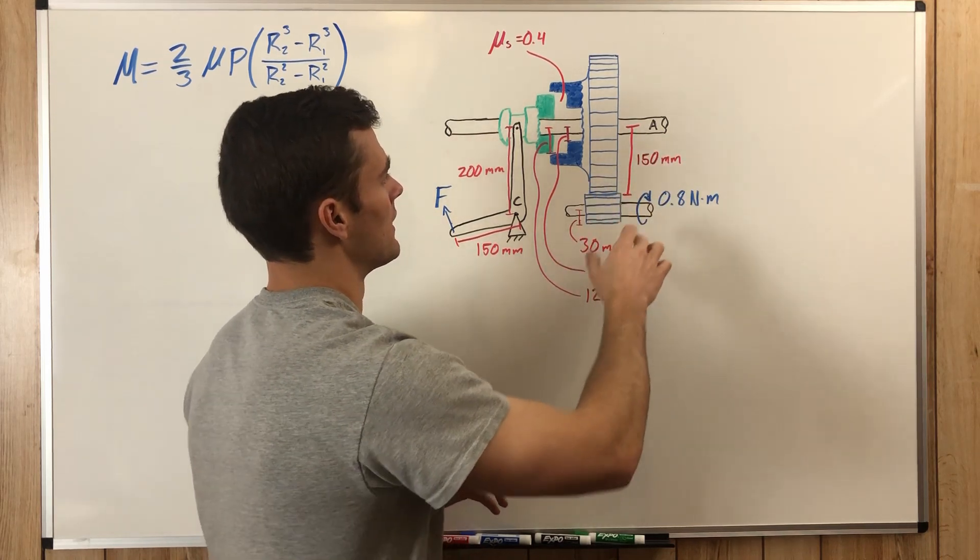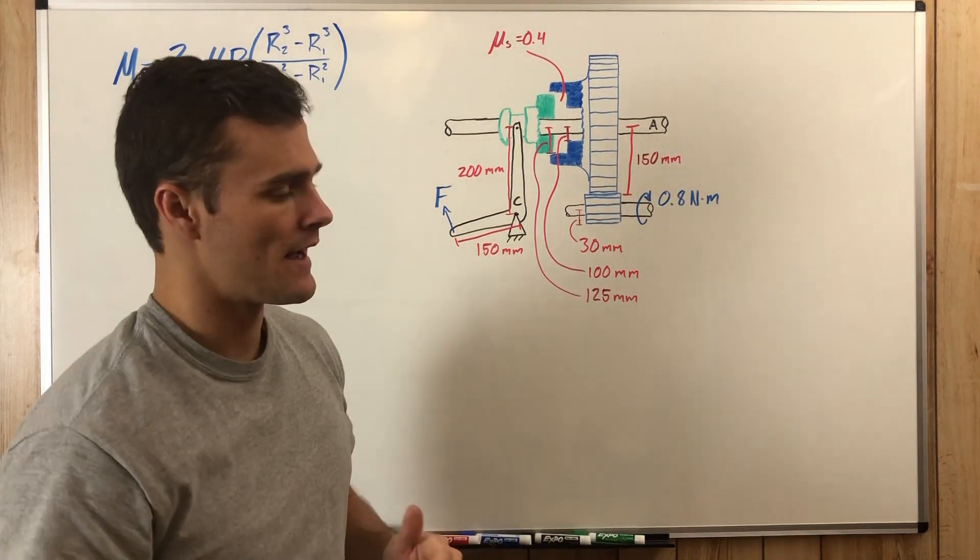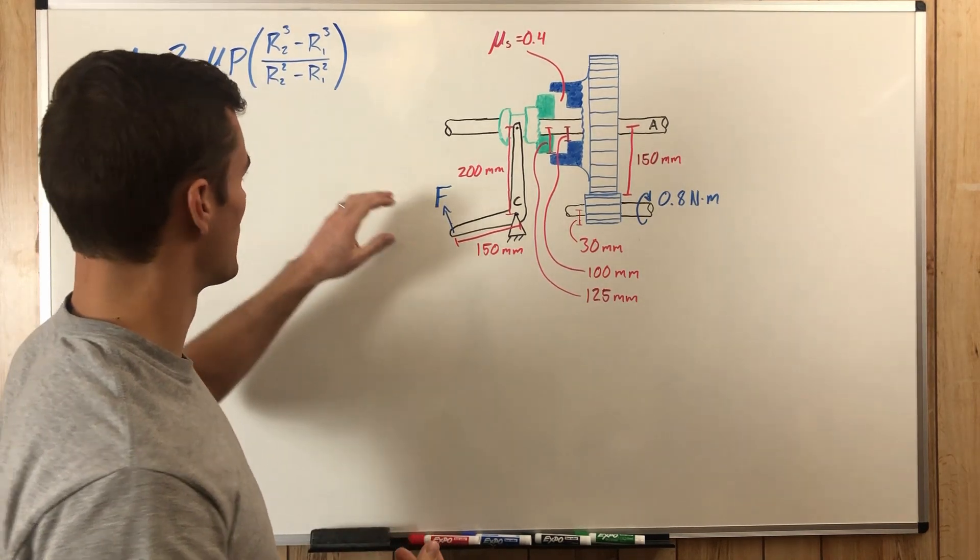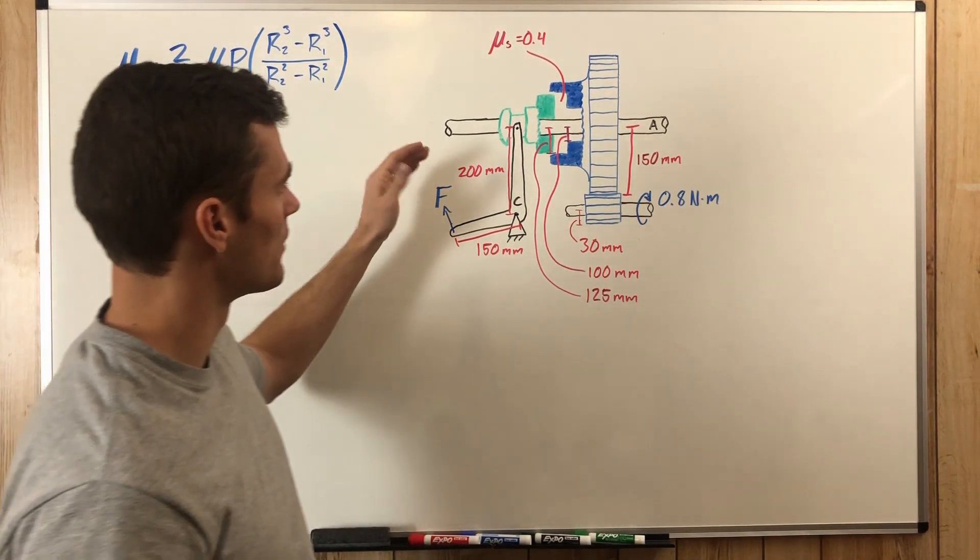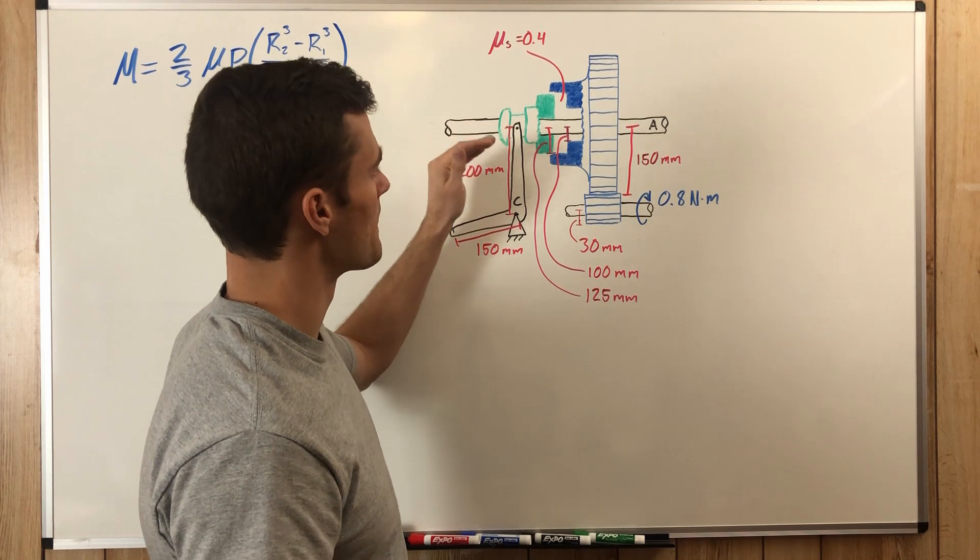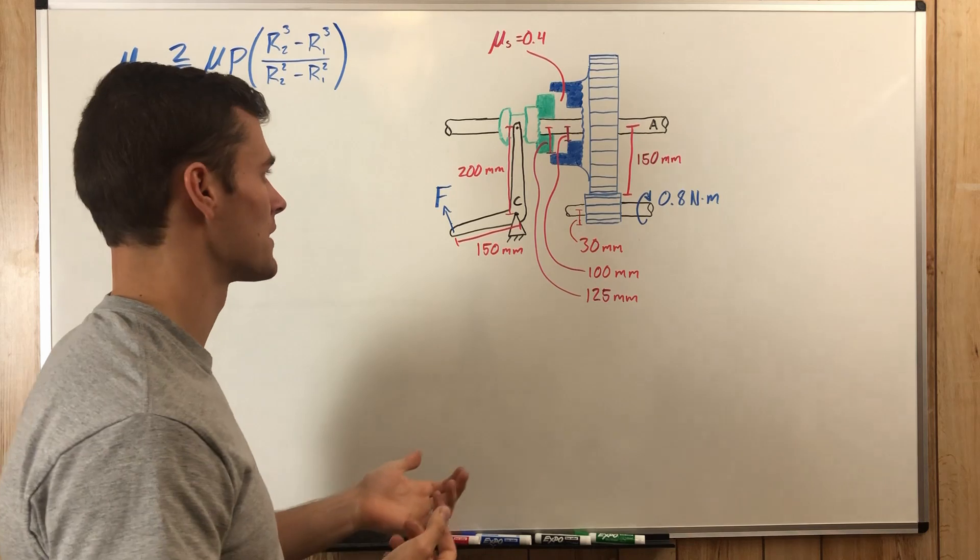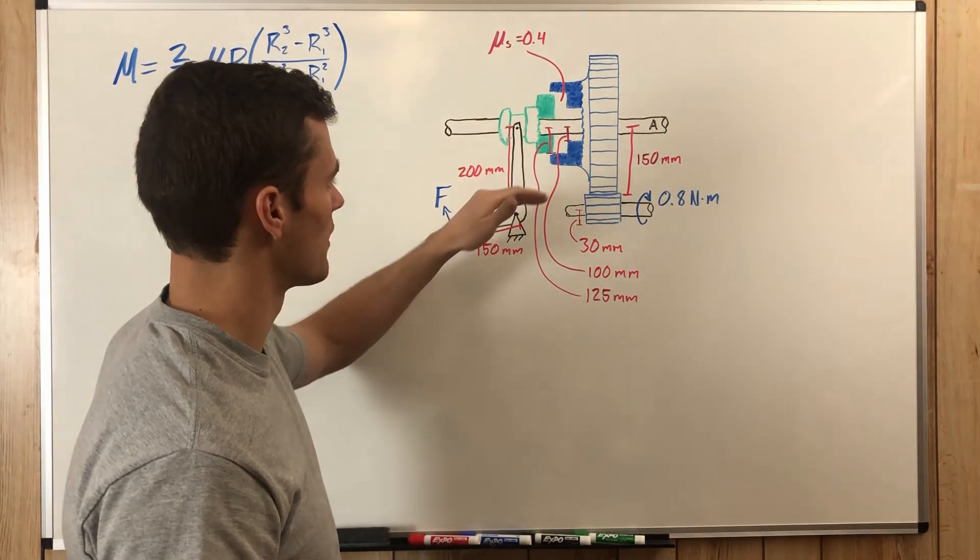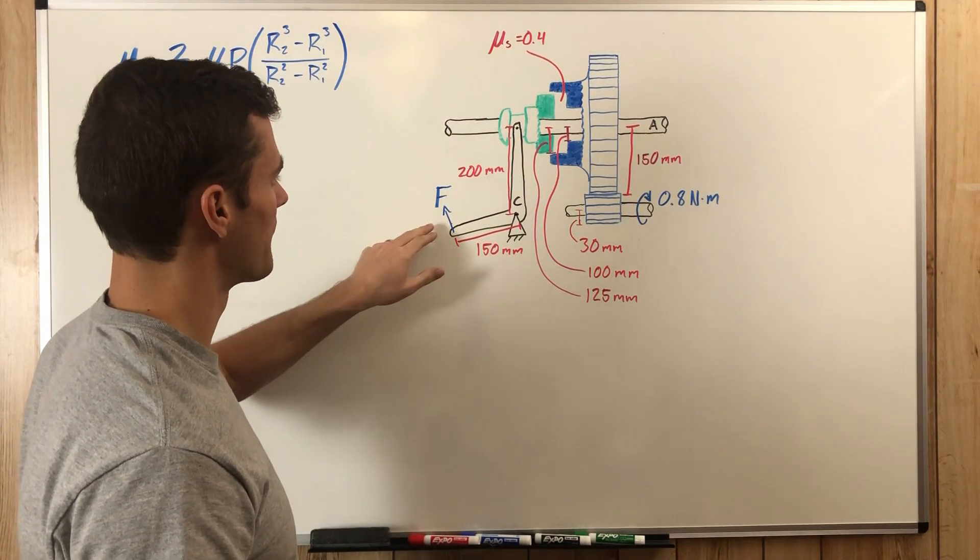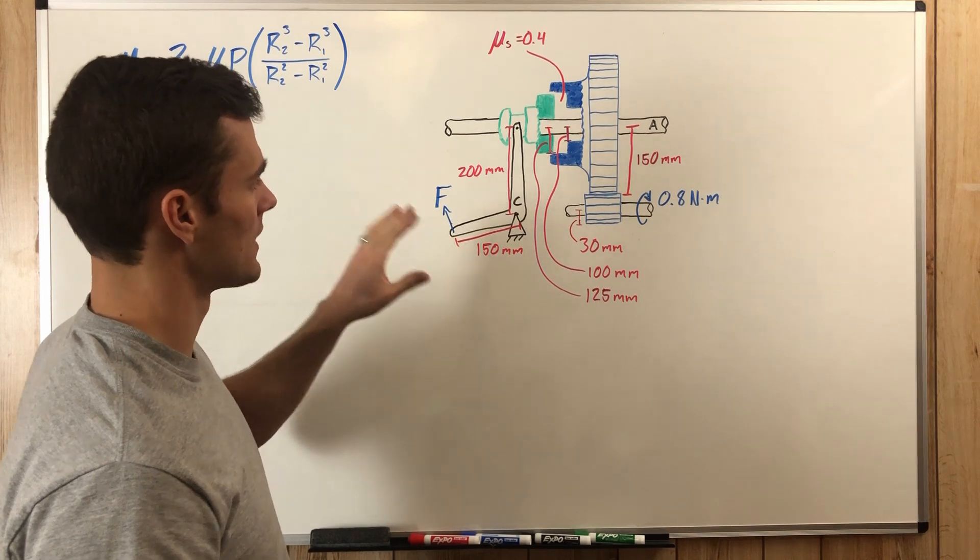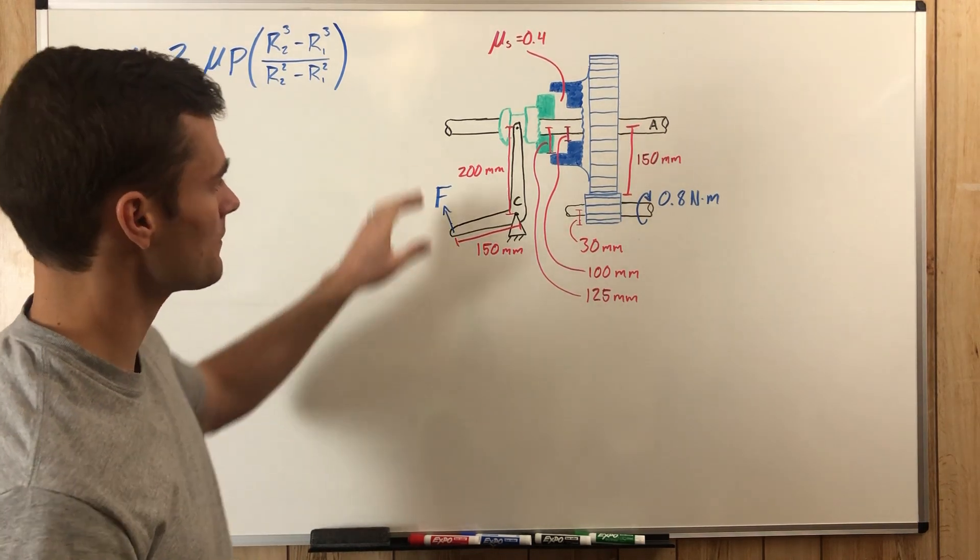We also have this force P that we need to find, which is the axial force that is causing the normal force that causes friction. That will be applied here and will come from our force F, but it's not going to be the same as F because the length of these parts of the lever are different.